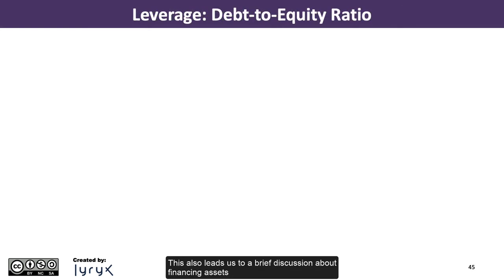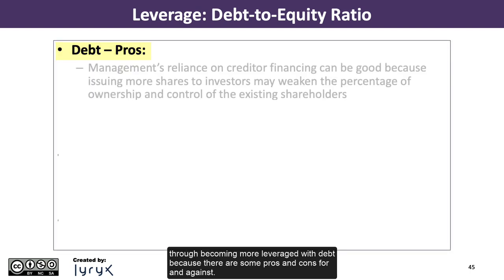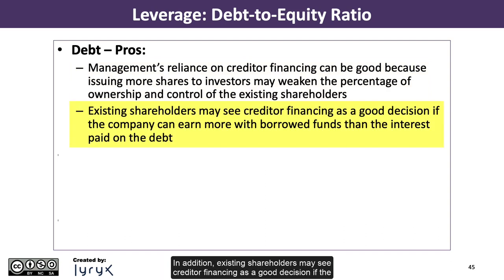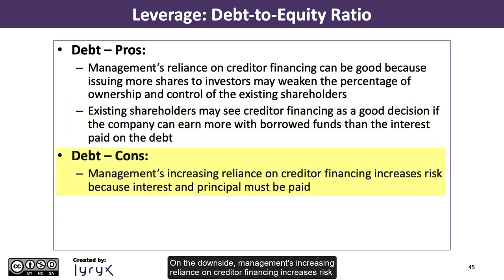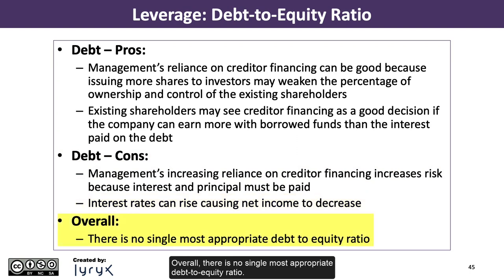This leads to a brief discussion about the pros and cons of financing assets with more debt. On the plus side, relying on creditor financing can preserve existing shareholders' ownership and control, since issuing more shares would dilute their percentage. In addition, creditor financing can be beneficial if the company earns more with borrowed funds than the interest paid. On the downside, increasing reliance on creditor financing increases risk because interest and principal must be paid, and rising interest rates can reduce net income. Overall, there is no single most appropriate debt-to-equity ratio.